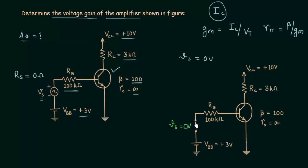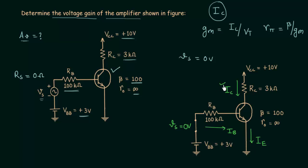We will apply Kirchhoff's voltage law in the input loop to find the base current. The current in the base branch is IB, the current in the collector branch is IC, and the current in the emitter branch is IE. Our aim is to find the collector current IC, and for that we first calculate the base current IB.